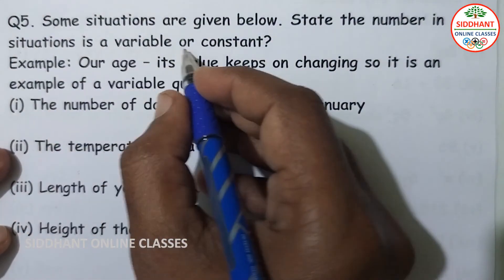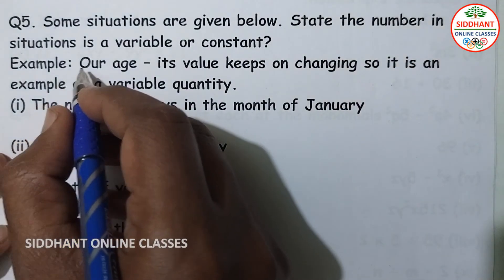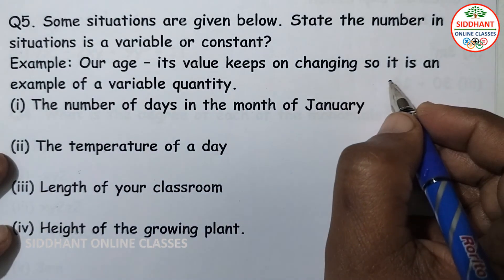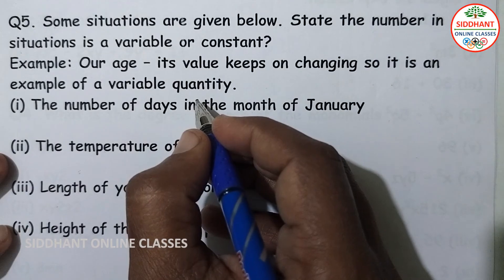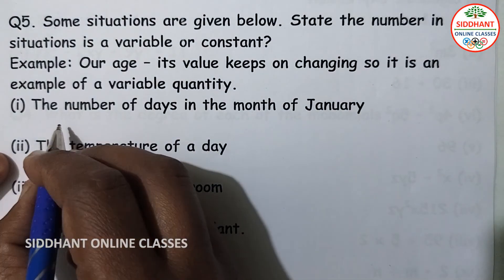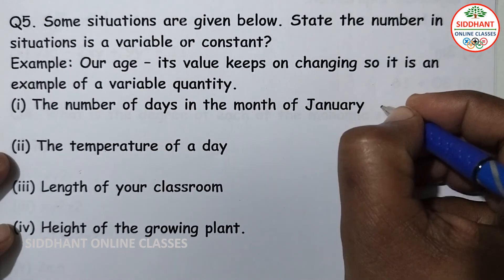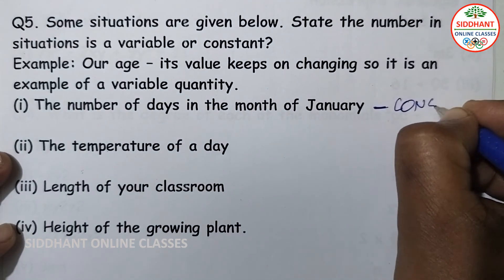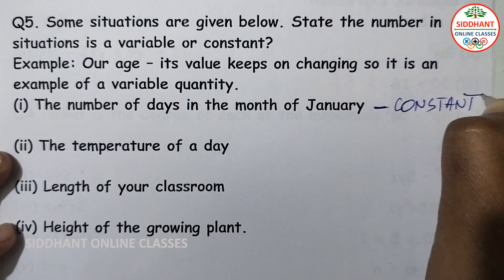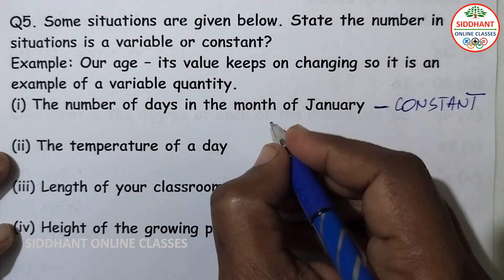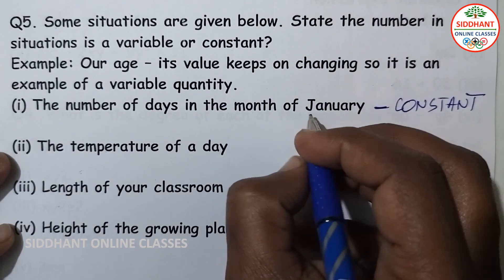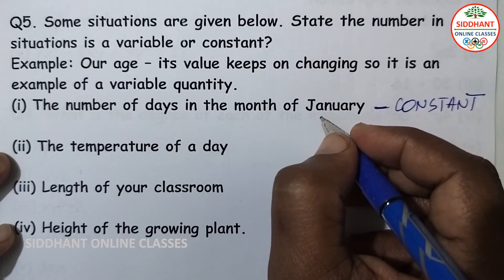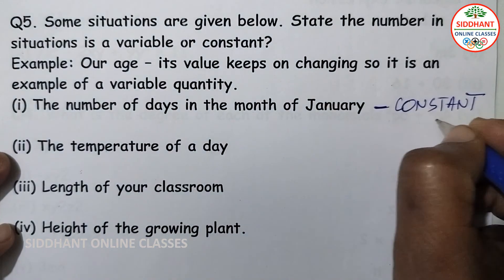Question number 5: some situations are given below. State whether the number in each situation is a variable or constant. The example given is our age — its value keeps on changing, so it is an example of a variable quantity. First, the number of days in the month of January — it is an example of a constant.